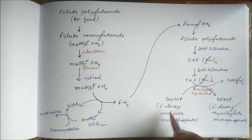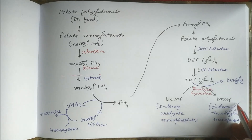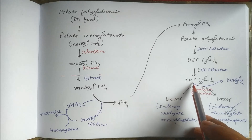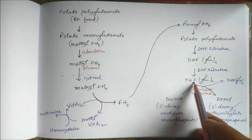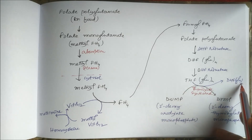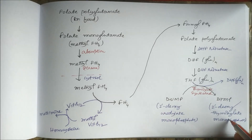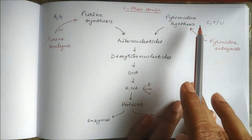Thymidylate synthetase converts deoxyuridine monophosphate (dUMP) to deoxythymidine monophosphate (dTMP). The coenzyme for this enzyme is tetrahydrofolate polyglutamate, which by acting as coenzyme becomes dihydrofolate polyglutamate. In this way, folate plays a role in DNA synthesis, alongside purines and pyrimidines.